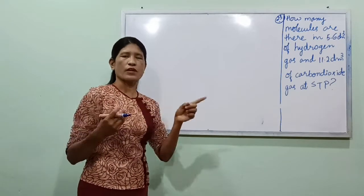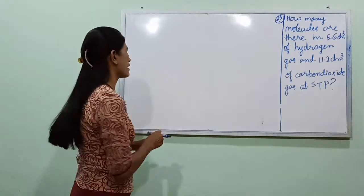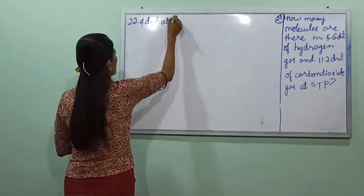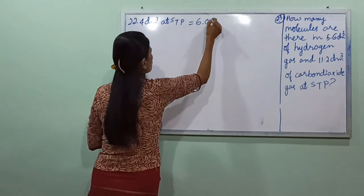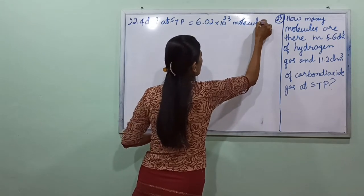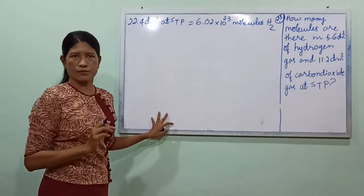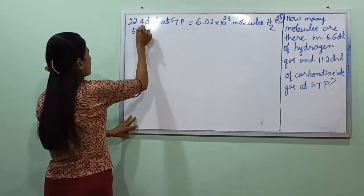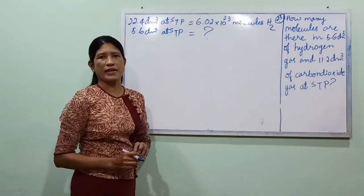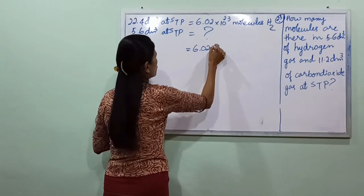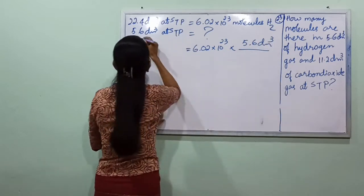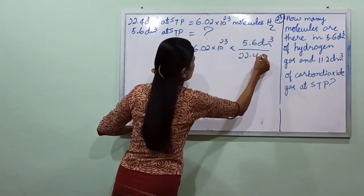The molar volume at STP is 22.4 dm³, which contains 6.02×10²³ molecules. For H₂ at 5.6 dm³ at STP: number of molecules equals 6.02×10²³ multiplied by 5.6 dm³ divided by 22.4 dm³.